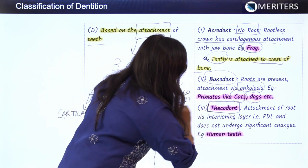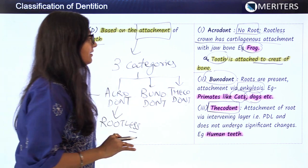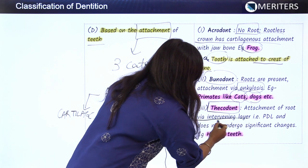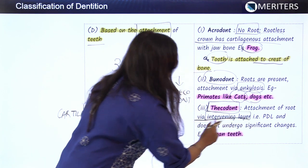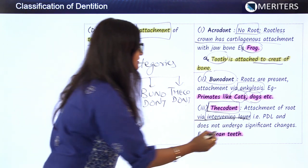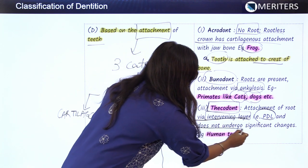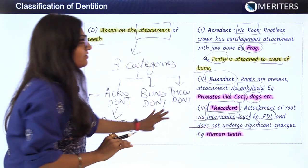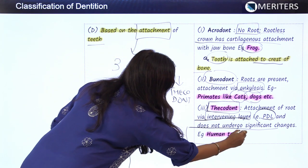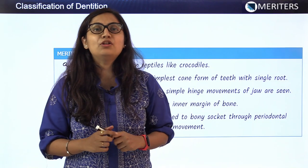The third type is thecodont, which is an important category because human teeth are a type of thecodont. Here, the attachment of the root is via an intervening layer — they are not ankylosed. There is a layer present between the tooth and the surrounding jaw structures, like the periodontal ligament, and it does not undergo significant changes. Such teeth are called thecodont, and human teeth are the example.